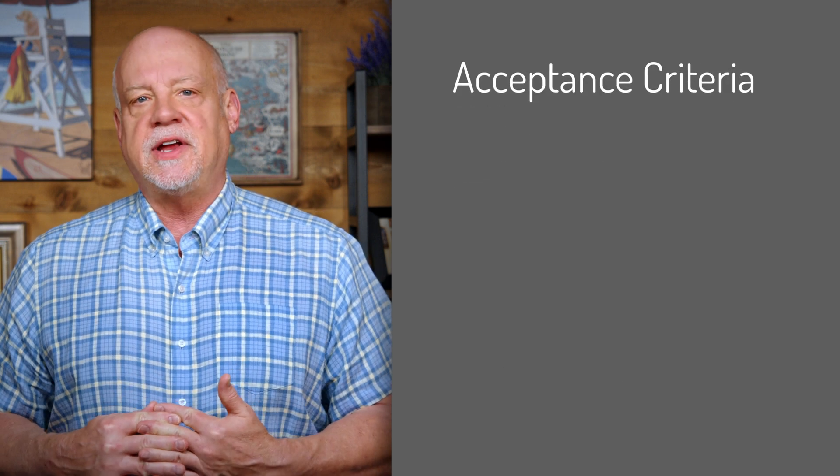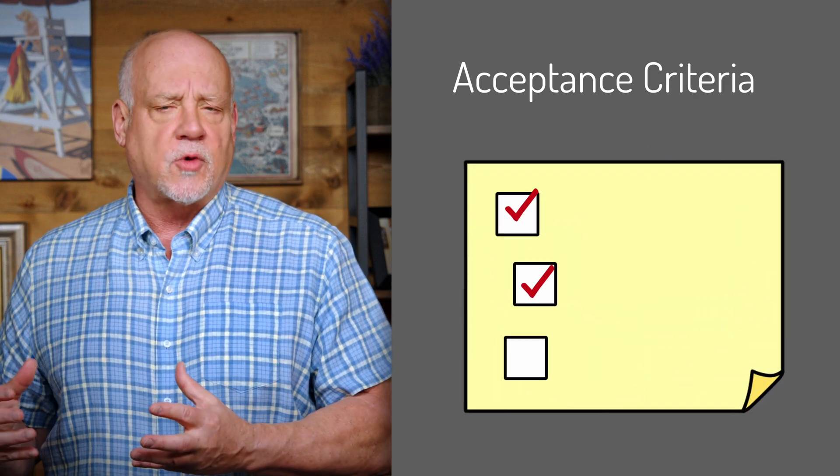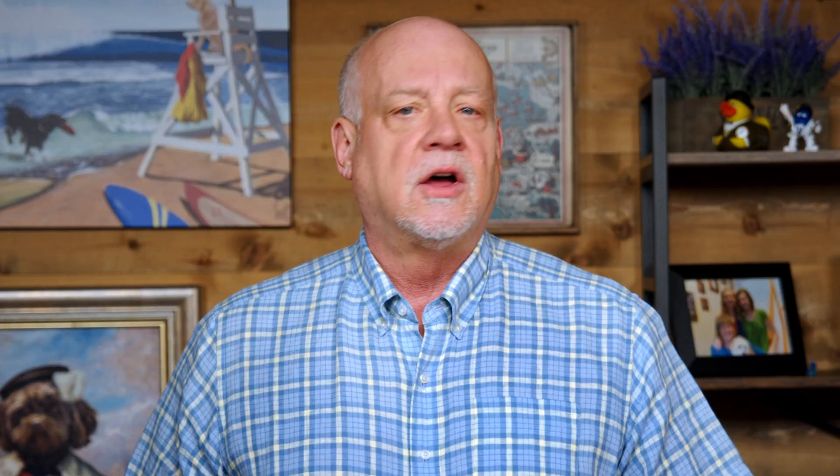The second way to capture details is as acceptance criteria. A user story should include acceptance criteria — conditions that must be met before the story is considered done. Whether you're using sticky notes or a digital tool, there's always a place to capture a story's acceptance criteria. These are essentially high-level test cases that define what done looks like for a story.